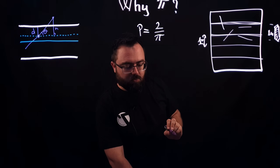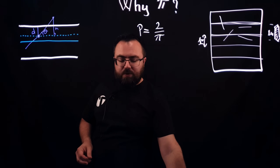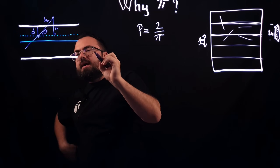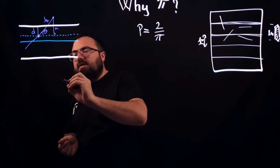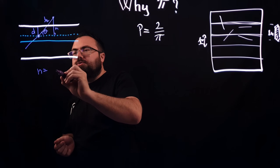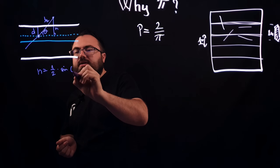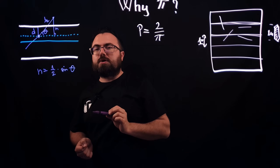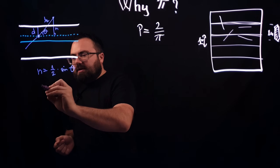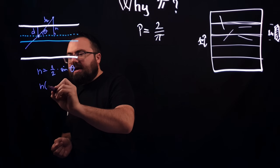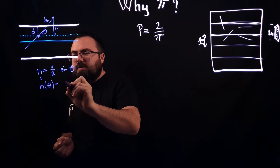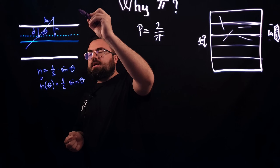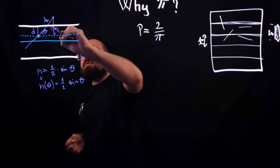We call the angle theta. What is obvious from the start is that the half-length of the needle is 1 over 2. We can express H as equal to one half times sine of theta, because sine of theta equals H divided by one half. We can think of this as a function H of theta, which is sine of theta divided by 2.